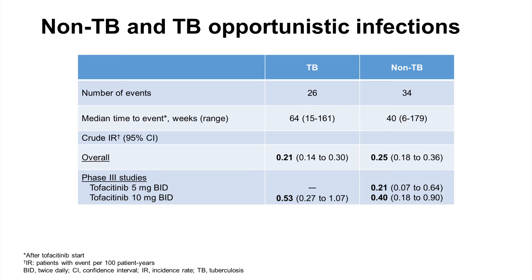TB occurred with a crude incidence rate of 0.21 per 100 patient years. Twenty-six cases were reported; of these, 20 occurred in those taking the 10 mg dosage. All cases had either negative screening results at study entry or a history of prior adequately treated TB. The median time between starting tofacitinib and TB was 64 weeks. In Phase III studies, no cases of TB occurred with tofacitinib 5 mg twice daily; the crude incidence rate in the 10 mg group was 0.53 per 100 patient years.